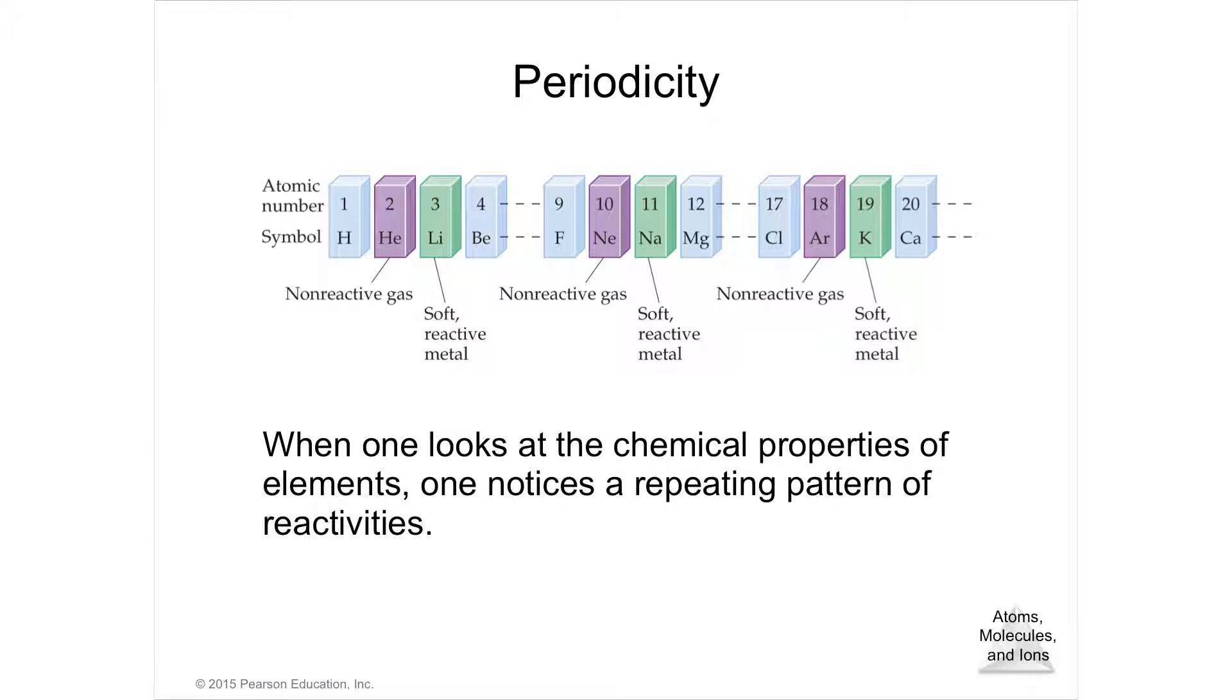So if you were to have say, let's look at this, the purple. The purple is a non-reactive gas and then the next one you're going to have a soft reactive metal and then it continues with different properties until you get to a non-reactive gas and then a soft reactive metal and then again a non-reactive gas and a soft reactive metal. So when you see the periodic table, the non-reactive gas is the eighth column. The soft reactive metal is the first column. So it repeats.